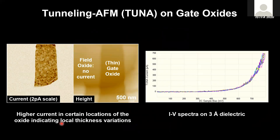A second conductivity application is when we go to dielectrics. For dielectrics, the current is typically a tunnel current rather than a direct current, and we often refer to the mode as tunneling AFM rather than simply conductive AFM — though it is the same mode. Here we image an area with both very thin and thick oxide, measuring conductivity at the same time. Through the thin oxide some current can flow by tunneling; the thick one is too thick and no current flows. Variations in the thin oxide are related to variations in dielectric thickness or defects located in the dielectric.